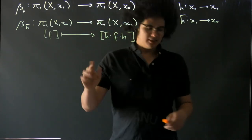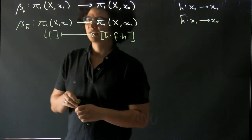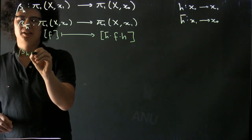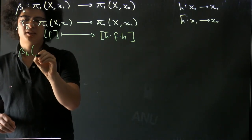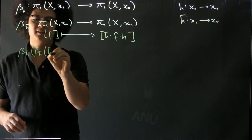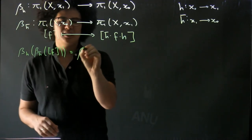And now we want to see that these are inverse group isomorphisms. So if we take β_h and apply it to β_h bar applied to some map f, well we're going to get β_h applied to...